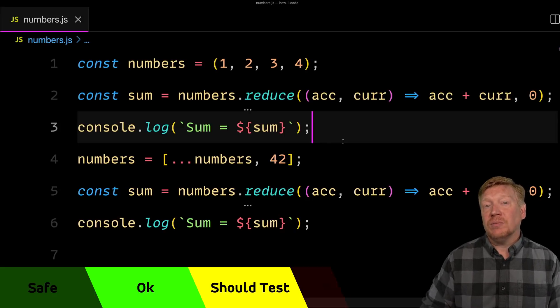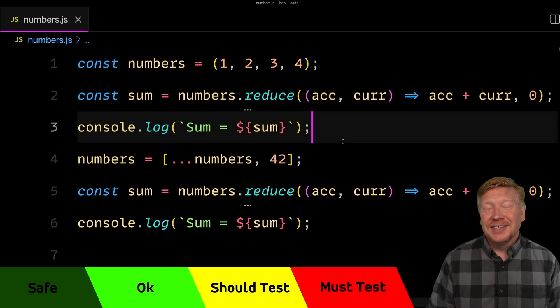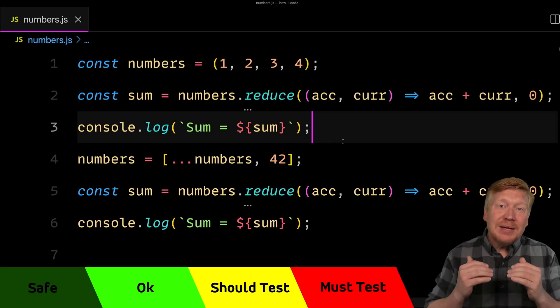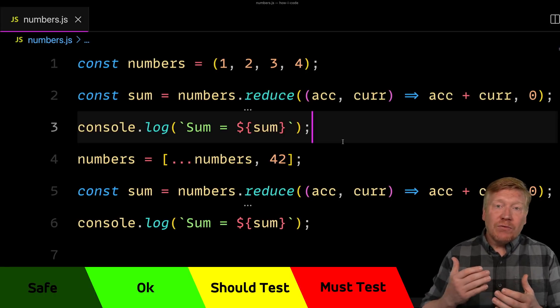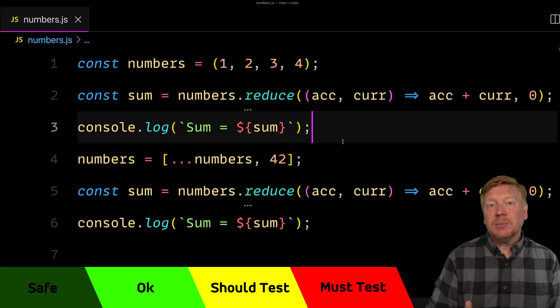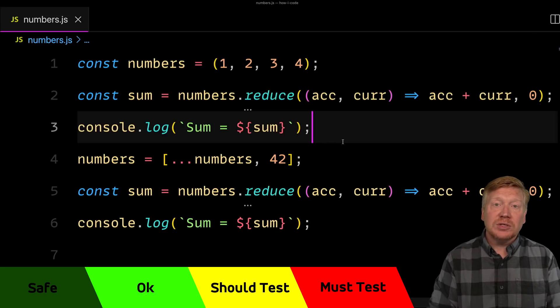And then extending from there is the red bar. And that's when you absolutely know at this point, you need to test and you can't write any more code until you test. Now, where are those bars? What thresholds should you set? Well, that really depends on your familiarity with the language and how you're feeling about how good of an engineer you are today.